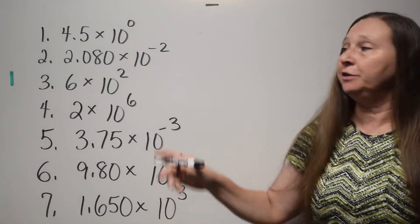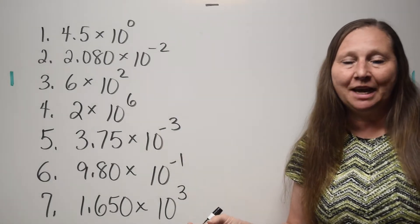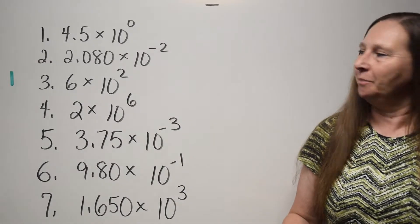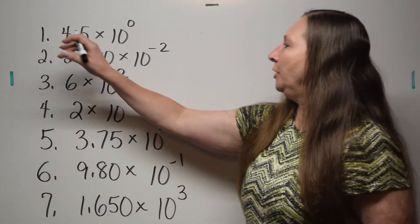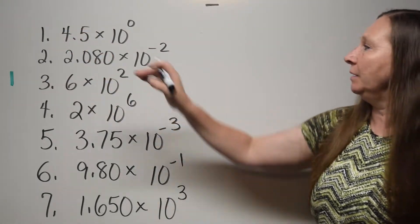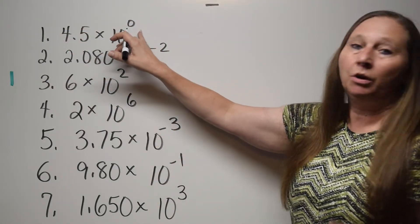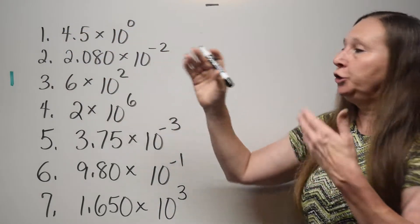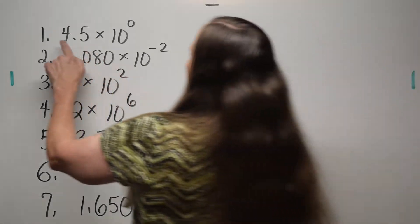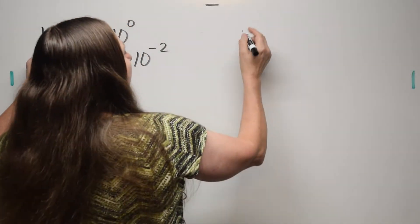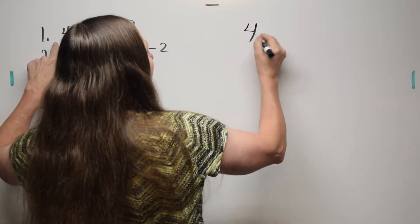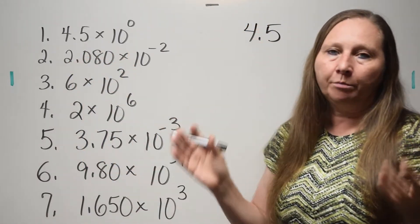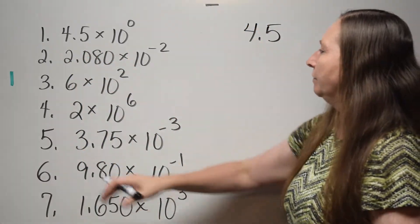Let's convert these numbers in scientific notation to decimal form. Here we go: 4.5 times 10 to the zero — zero jumps, don't move the decimal. The answer is 4.5. This is the number 4.5.